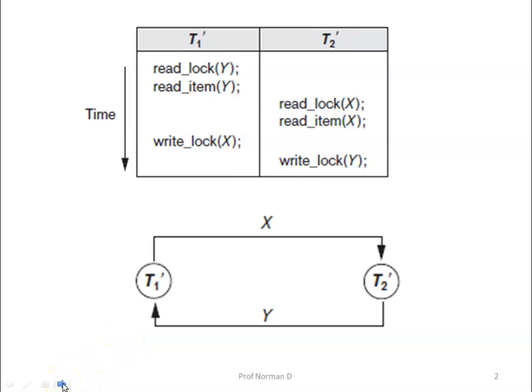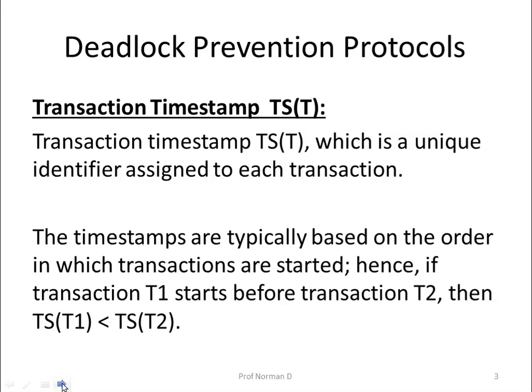One way to prevent deadlock is to use deadlock prevention protocols. One such protocol is conservative two-phase locking, which we have already seen in the previous session. This mechanism requires that every transaction lock all the items it needs in advance; if any item cannot be obtained, none of the items are locked. Other deadlock prevention schemes make a decision about what to do with a transaction involved in a possible deadlock — whether it should be blocked and wait, aborted, or preempt and abort another transaction.